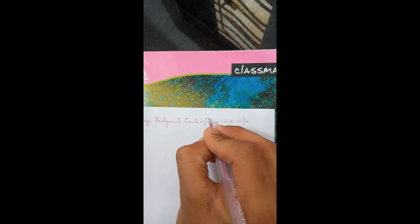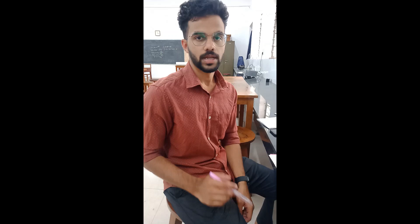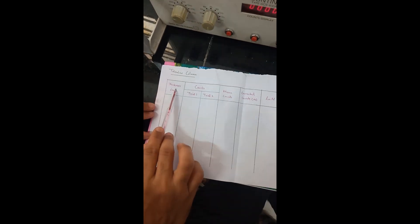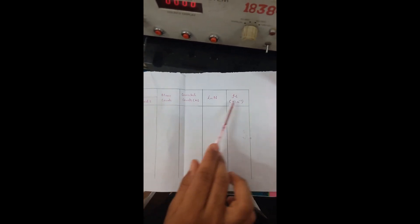The first background reading is 203. We take three background readings before the experiment starts and three more after, giving six readings total. Dividing by six gives the average background count. The data table columns are: thickness in millimeters, counts for two trials, mean count, corrected count, ln N, and ρt.